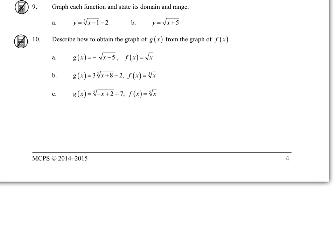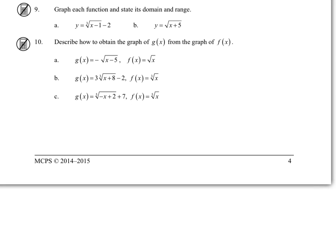And then for 10, to describe the transformations for A. The -5 inside means to the right 5. And the negative coefficient means it's been reflected over the x-axis.